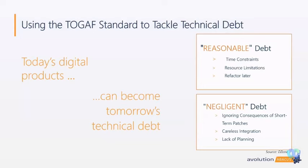It's not necessarily a bad thing to have technical debt. We've grouped this into reasonable and negligent debt. Reasonable debt typically falls into situations with time constraints where we issue waivers to push a product out because the benefits outweigh the time and cost to fix immediately, or where we have plans to refactor things later. Negligent debt is what we want to avoid: short-term patches to products not ready for release, poorly integrated systems, and lack of planning.